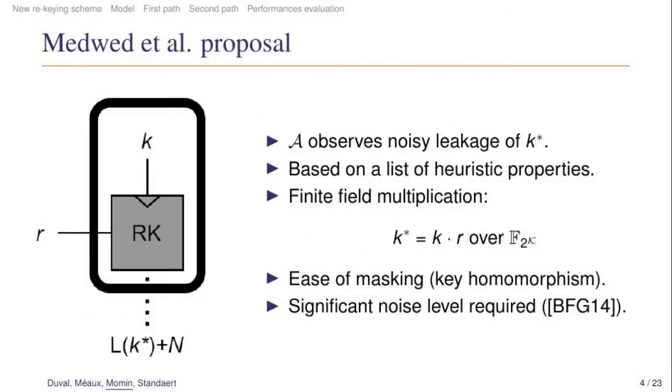As a first example, we remind here the proposal of Medwed et al. that has been published in 2010, for which they consider that an adversary A can observe noisy leakage of the value of k*. Their solution is based on a list of heuristic properties such as the fact that the rekeying function should have good diffusion or that this rekeying function should be easy to protect using masking. For a more practical side, the rekeying function is in fact a finite field multiplication, so k* is obtained by multiplying k with r over the field defined by 2^k. Their solution takes advantage of the fact that the finite field multiplication is in fact key homomorphic and allows this to implement the masking with a linear overhead in terms of the number of shares. While being efficient in terms of latency and cost, it has been shown that for the Hamming weight case the solution was easy to break without sufficient noise.